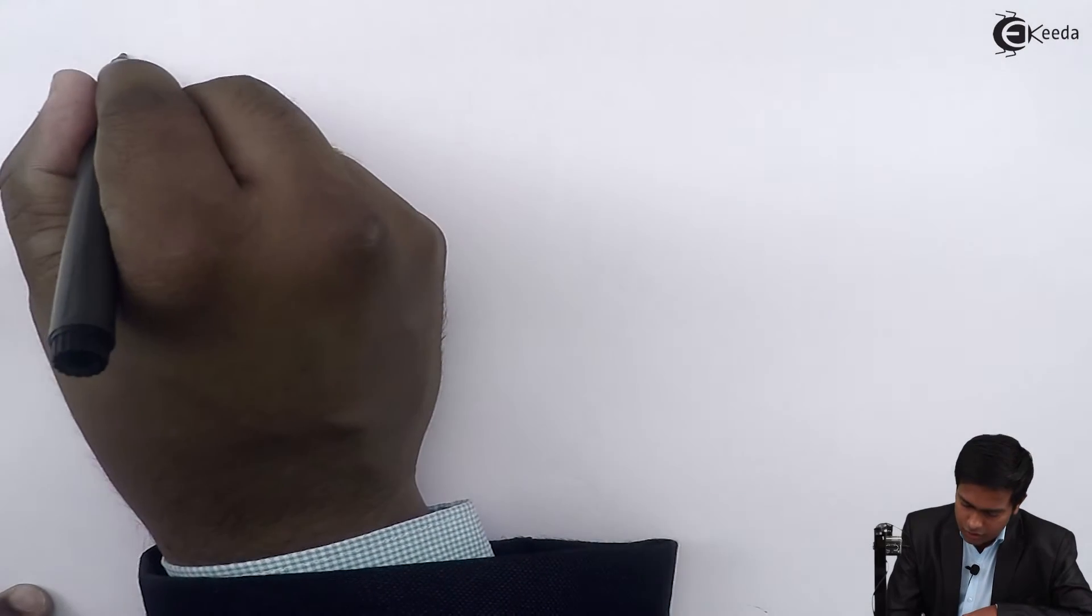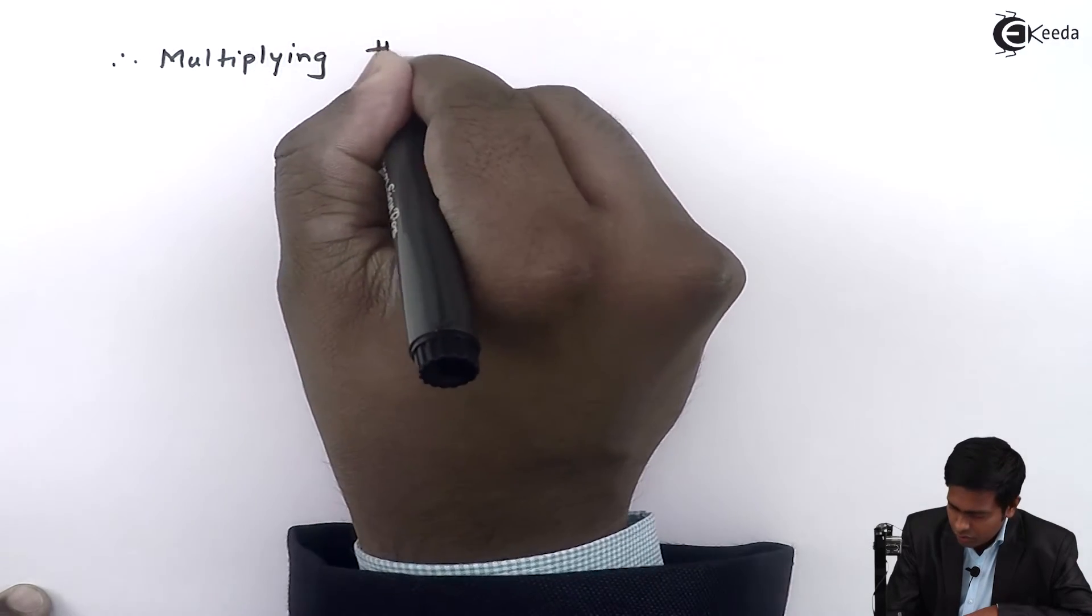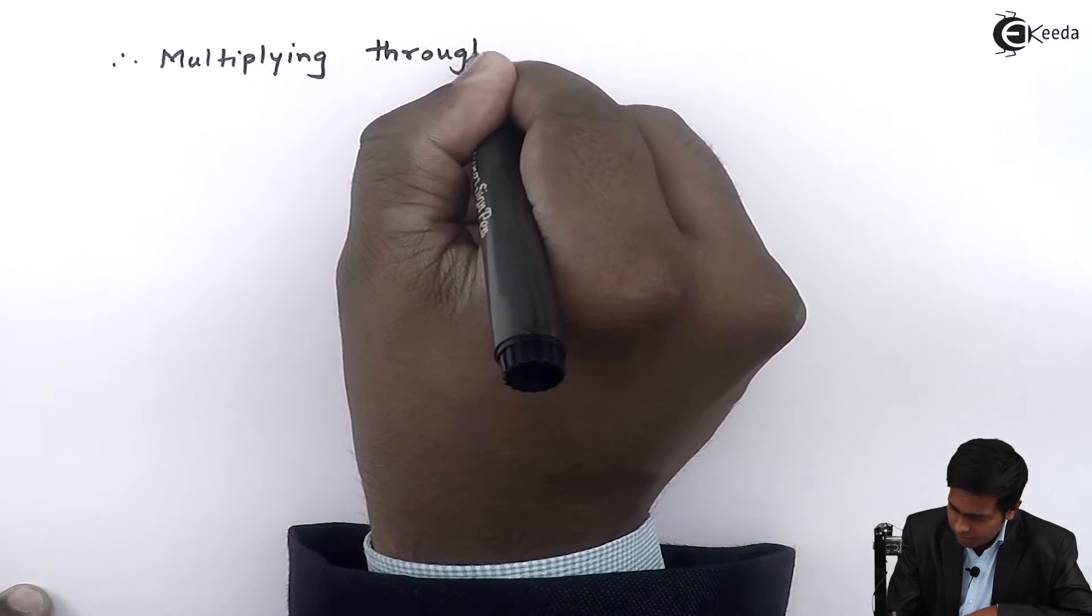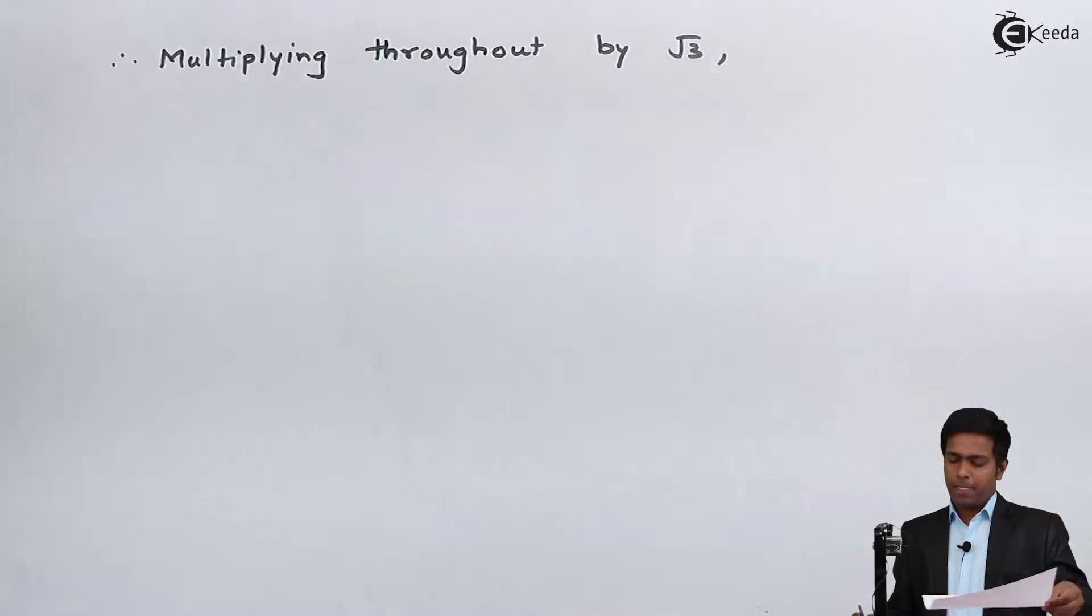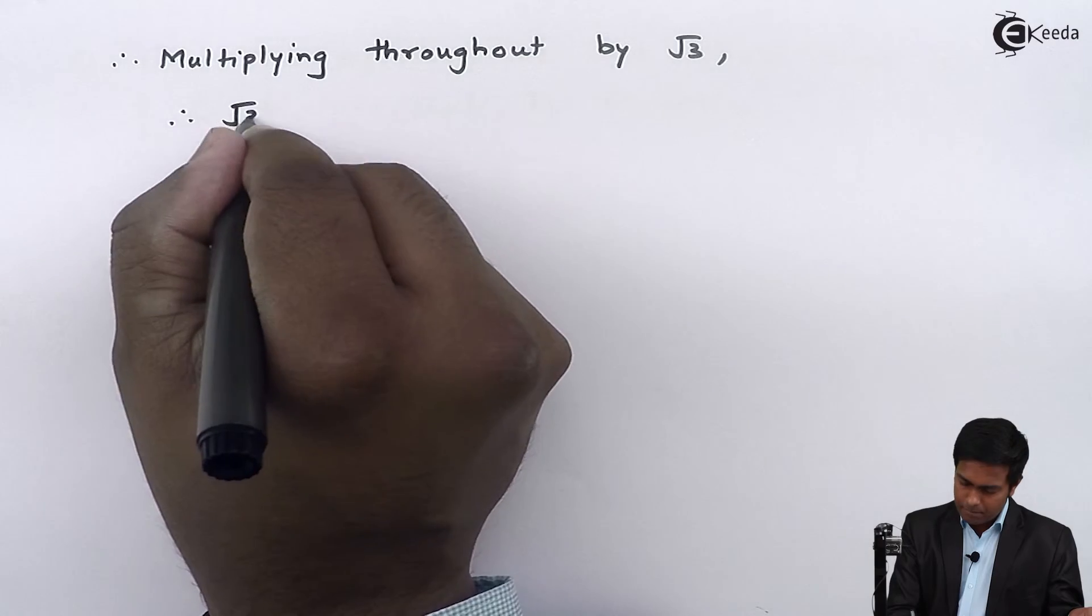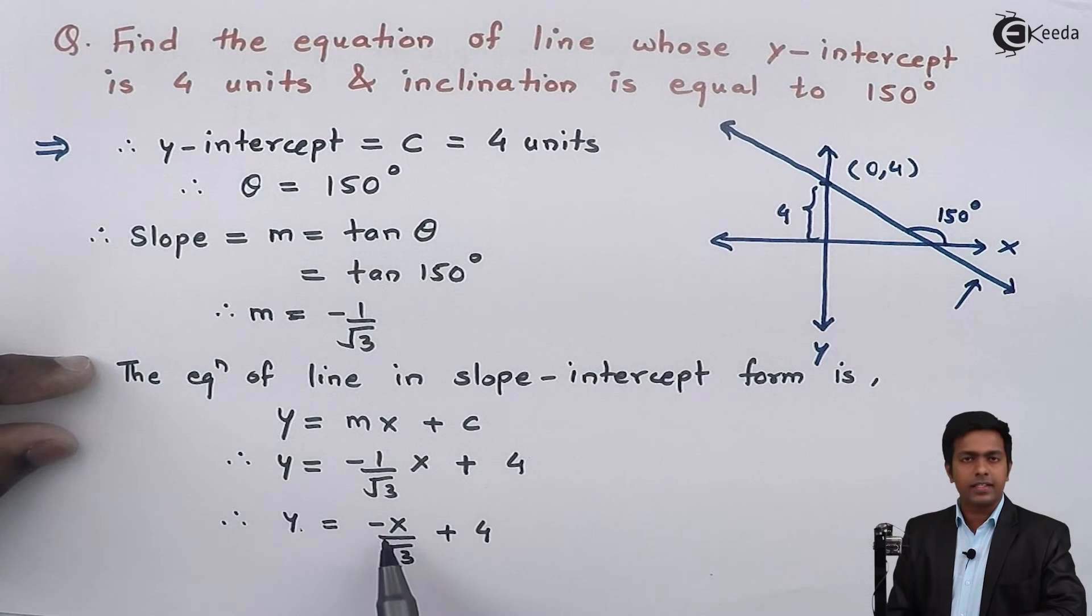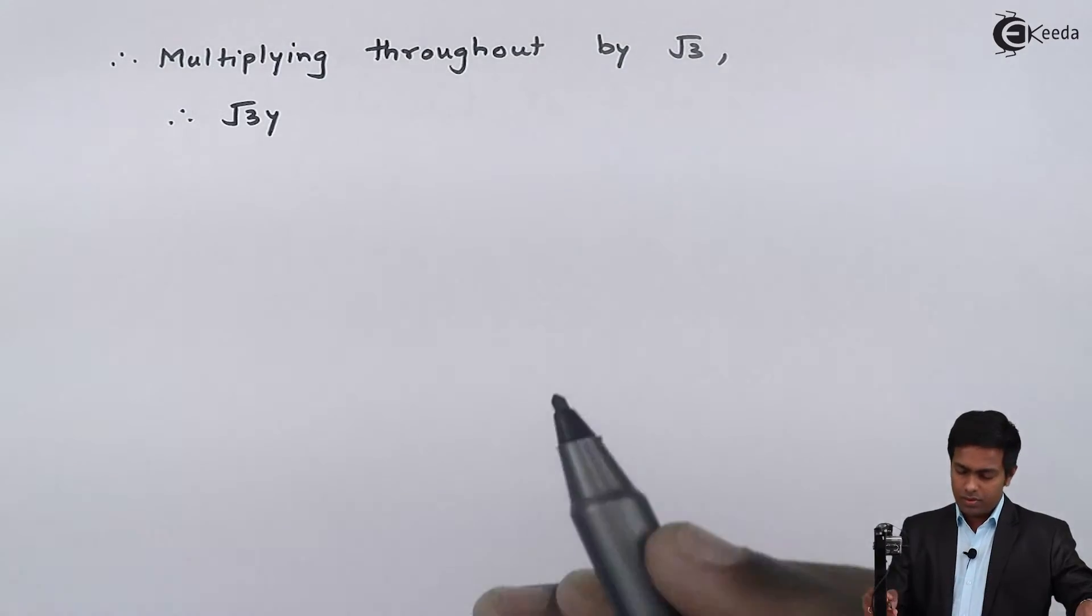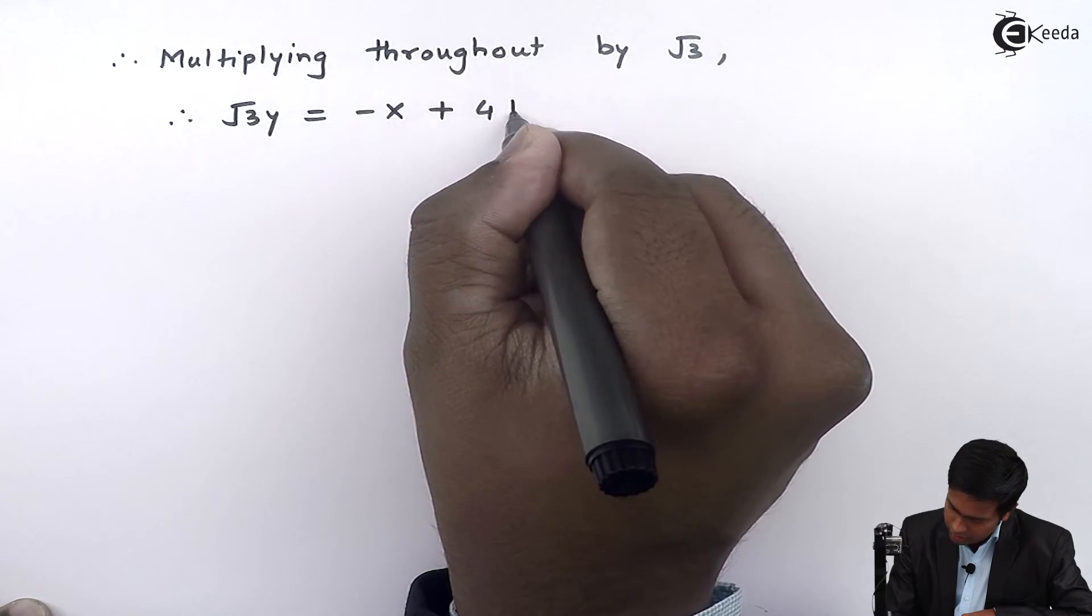So therefore, multiplying throughout by √3, we'll get √3y. Here √3 and √3 will cancel. So we'll get -x + 4√3. So it is equal to -x + 4√3.